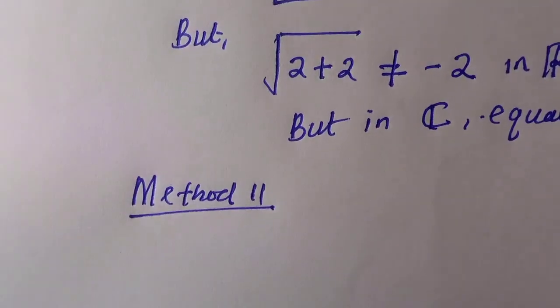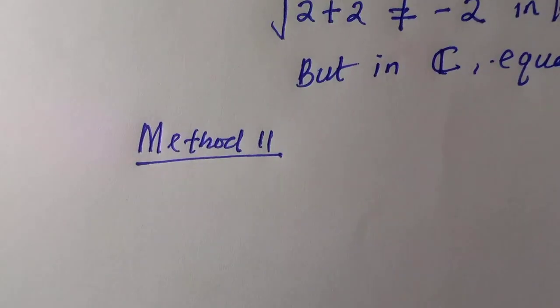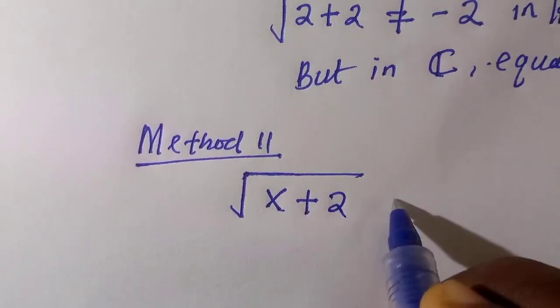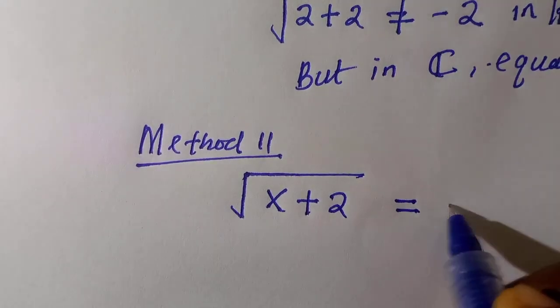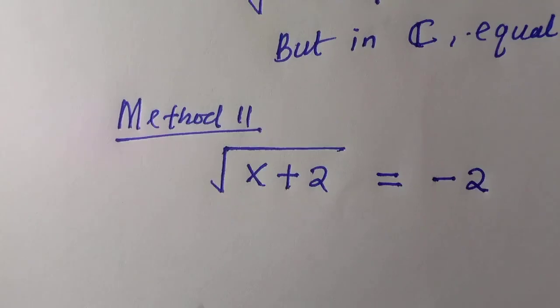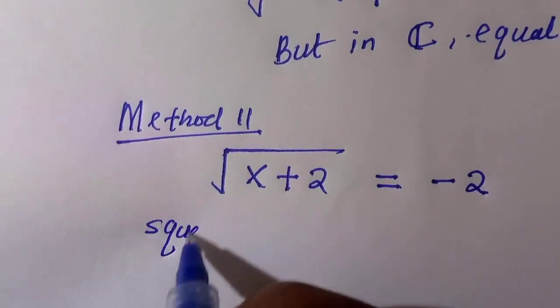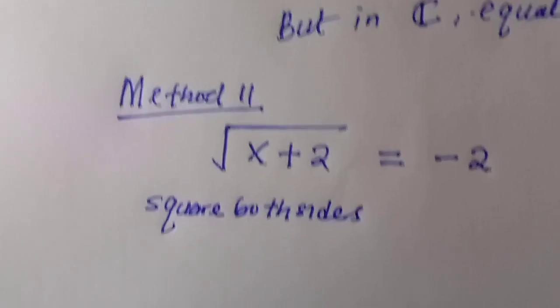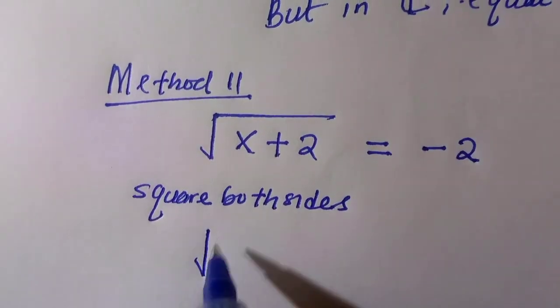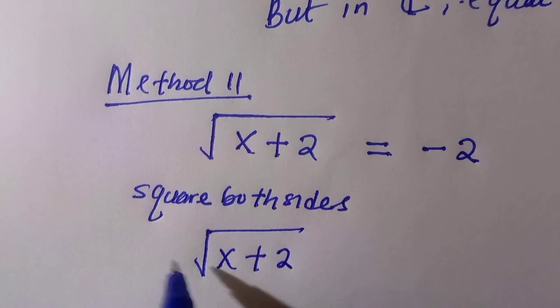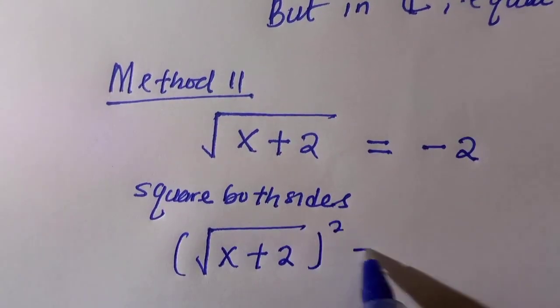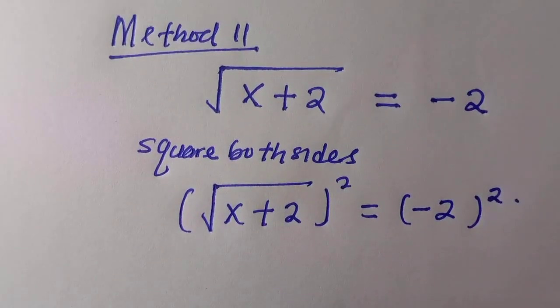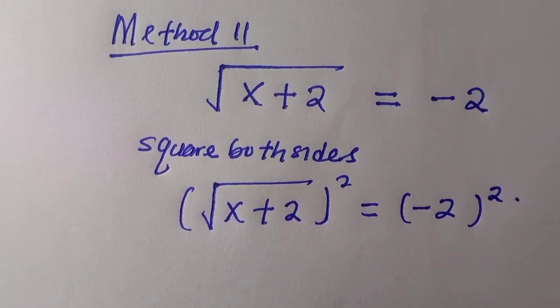Let's see the second method of solving this. Instead of passing through all those processes, we take square root of x plus 2 equals minus 2. By writing this minus 1 as i squared, you can just take the square root of both sides straight. We have square root of x plus 2 all squared equals minus 2 squared.